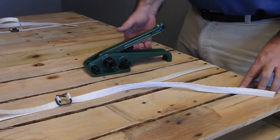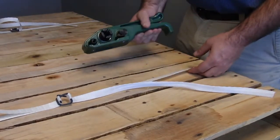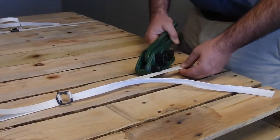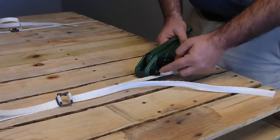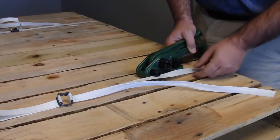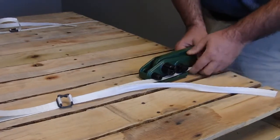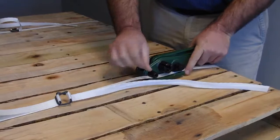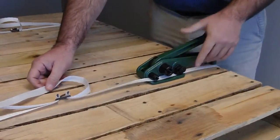The lumber cord tensioner is used by squeezing the handle and putting the strap underneath the cutter and on the back section of the tool which is the gripper. You snug that against the tool until it is in place.